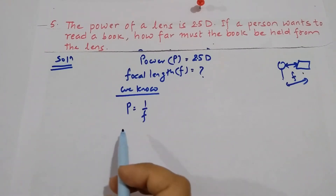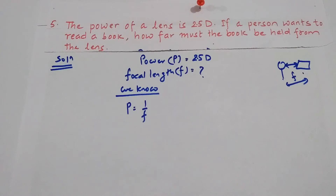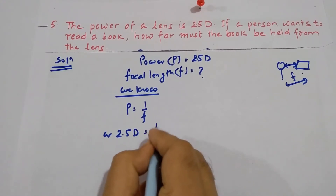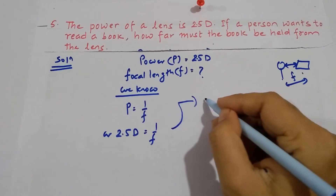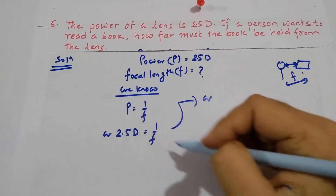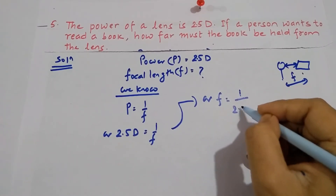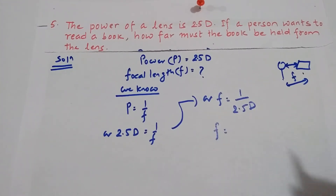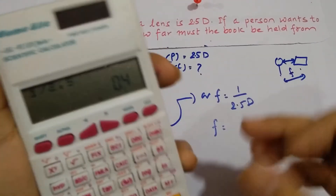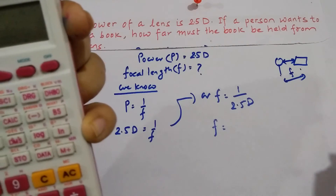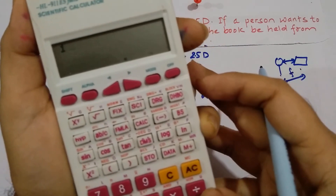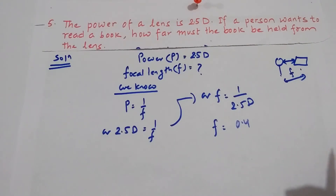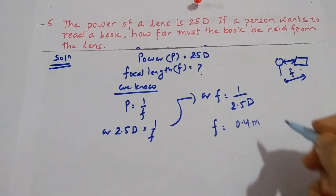We know the formula: power equals 1 upon focal length. Substituting: 2.5 D equals 1 by F. Rearranging: F equals 1 by 2.5 D. Using the calculator: 1 divided by 2.5 equals 0.4. The unit of focal length is meter. So the book must be held 0.4 meter from the lens.